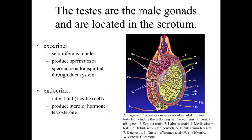The testes themselves have two main roles. You can think about the first role as an exocrine-type function. In this case, the exocrine product is going to be the sperm cells — the spermatozoa. So they're going to have seminiferous tubules, specialized structures involved with production of sperm cells. Those sperm cells are then transported like an exocrine product through a duct system, roughly parallel to what we've discussed with other areas of exocrine secretion.